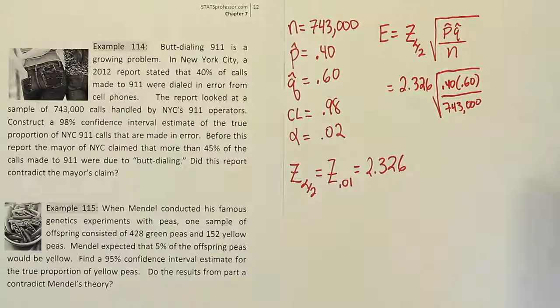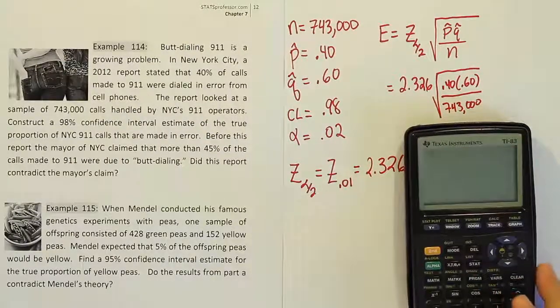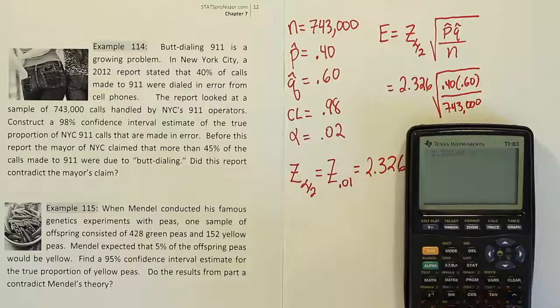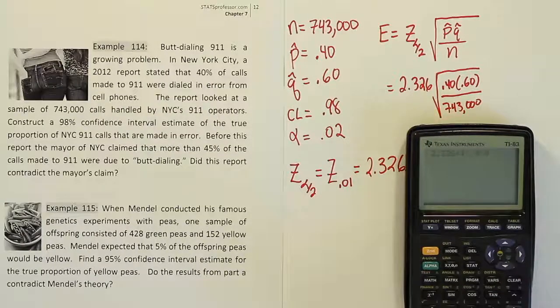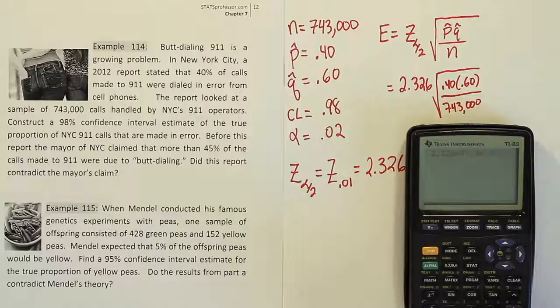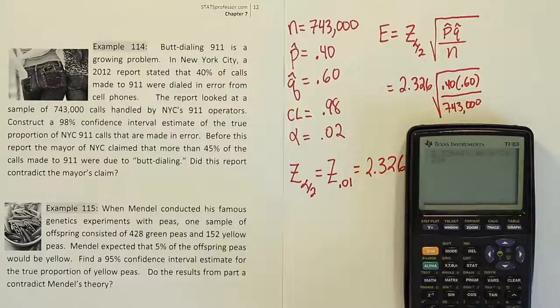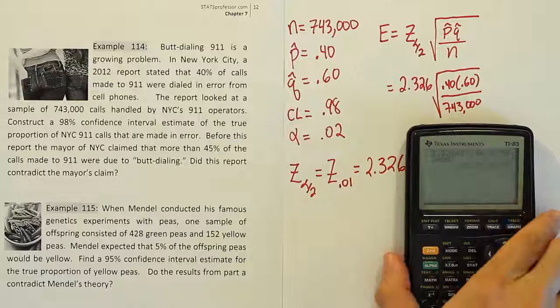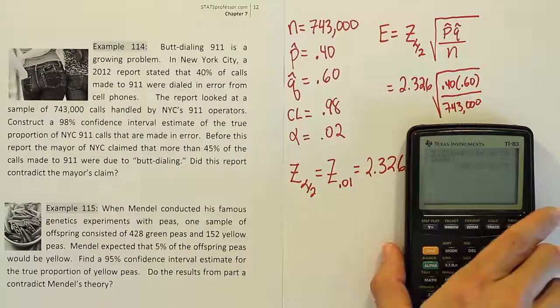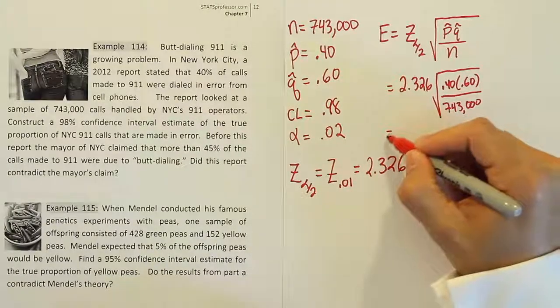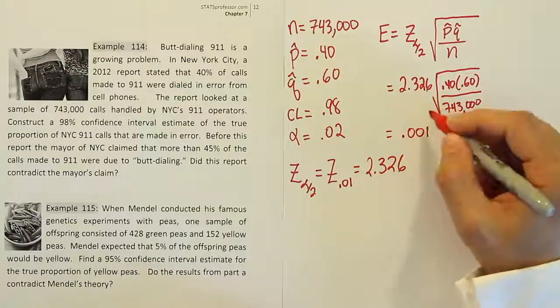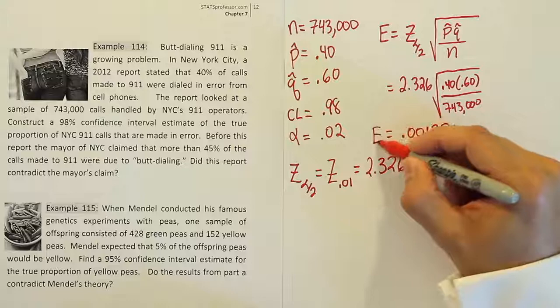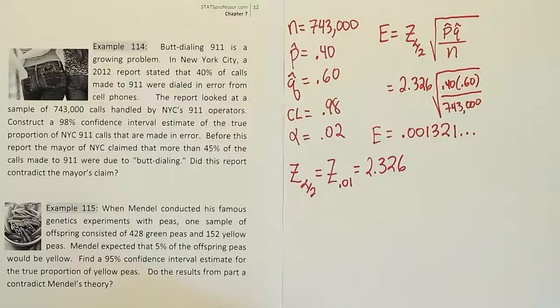Alright, so time to take the calculator out and do that calculation. So we're going to have 2.326 times the square root of 0.4 times 0.6 divided by 743,000. Close up the parentheses, hit enter, and we get a very small number, 0.00132, etc. Alright, so the error turns out to be 0.001321 dot dot dot. I'm going to store that in my calculator for use later.